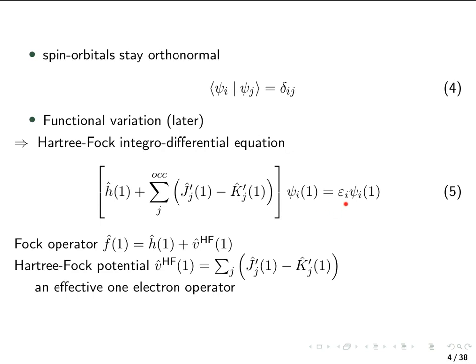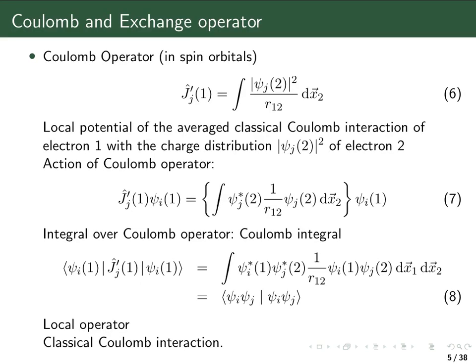Coming back to the Hartree-Fock equations, we can see that we sum over all spin orbitals j which are occupied, so we have the interaction of electron one with all the other electrons. Let's look at the Coulomb operator, presented here in the form of spin orbitals — that's the reason for the prime in J'. Always when there's a prime, it's in terms of spin orbitals; later we will get a Coulomb operator in spatial orbitals.